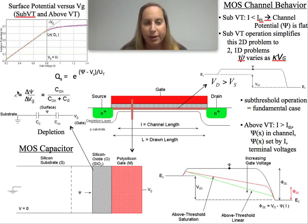We define a term kappa, Greek letter kappa, as the change in the surface potential over the change in the gate voltage, as basically this capacitive voltage divider of oxide over depletion capacitance. And this is true sub-threshold, above-threshold, anything, depending on how you know those terms.